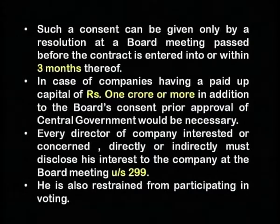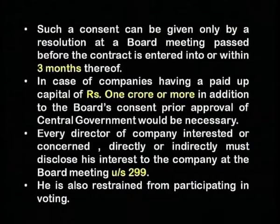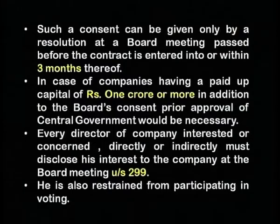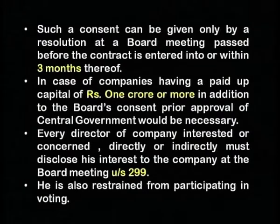If a company has a paid-up capital of one crore or more, in addition to the board's consent, prior approval of the central government would also be necessary. Every director of a company who is interested or concerned, directly or indirectly, must disclose his interest to the company at the board meeting under Section 299. He is also restrained from participating in voting at the meeting.